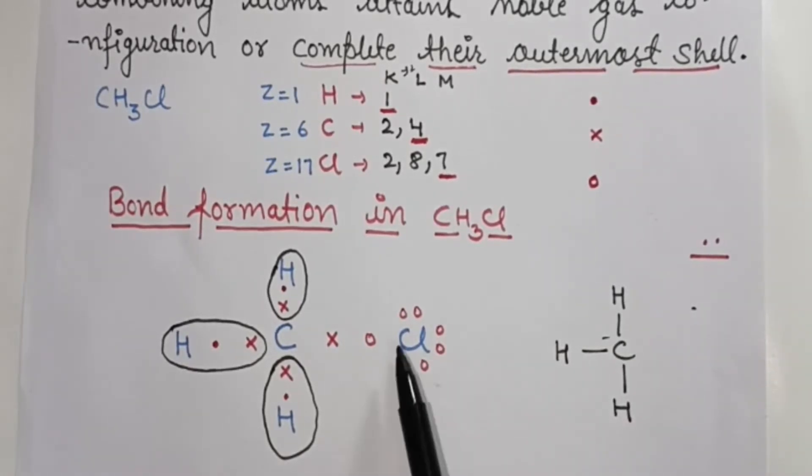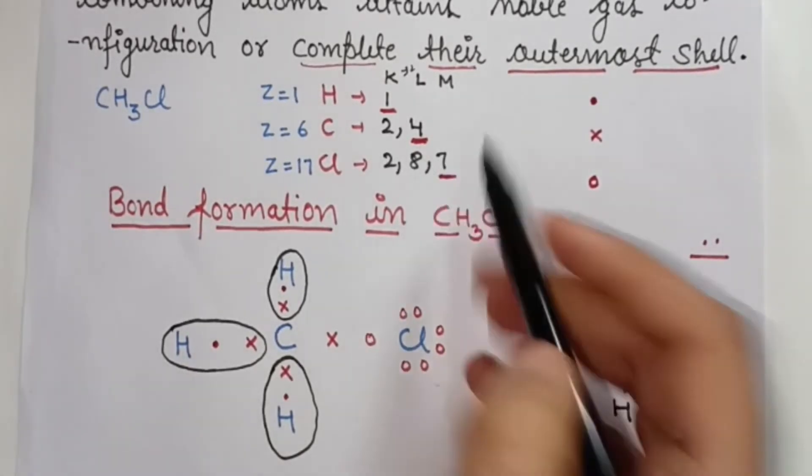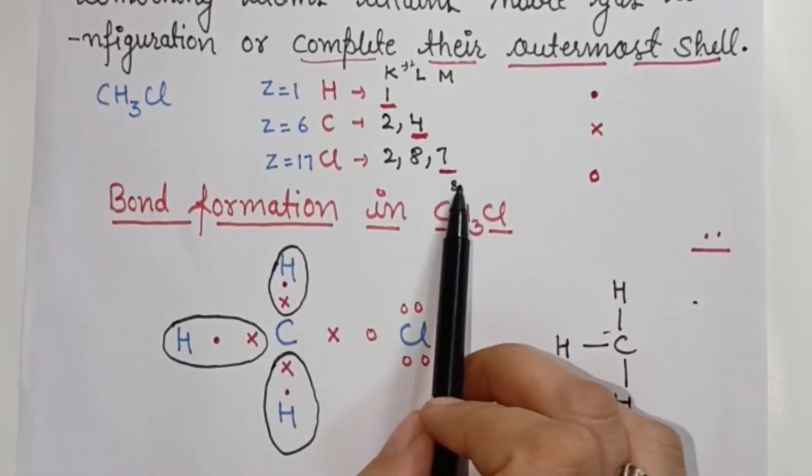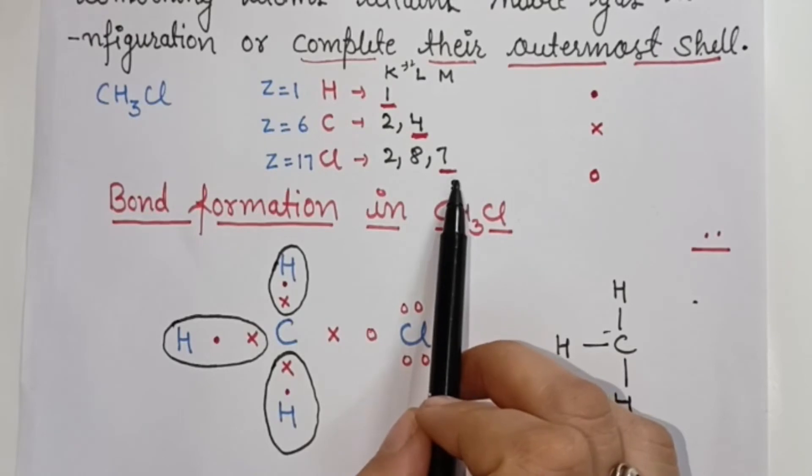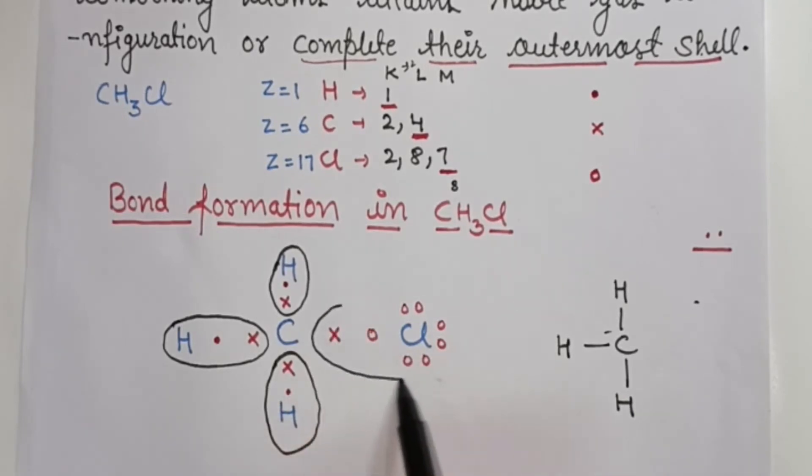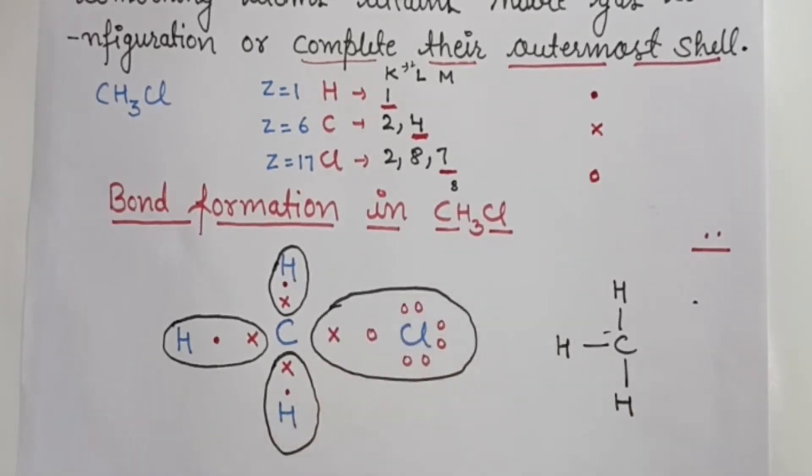Now chlorine has 7 valence electrons. For the outermost shell to be complete, how many electrons are required? 1 electron is required because we can accommodate total 8 electrons in the shell. So we have 7 but need 1 more.